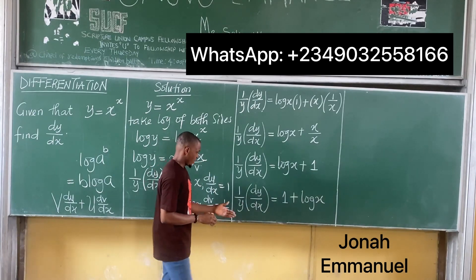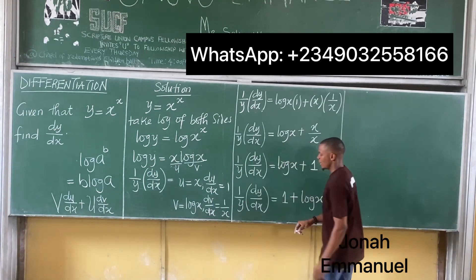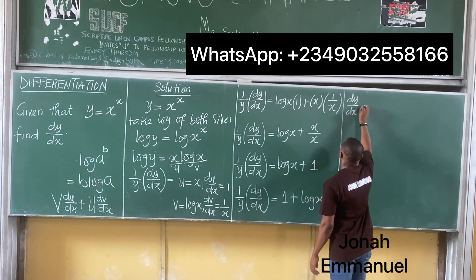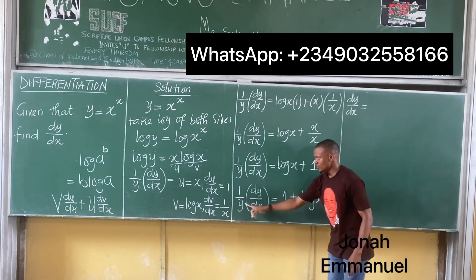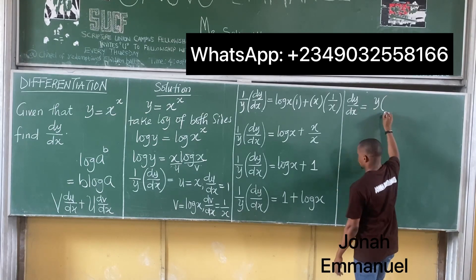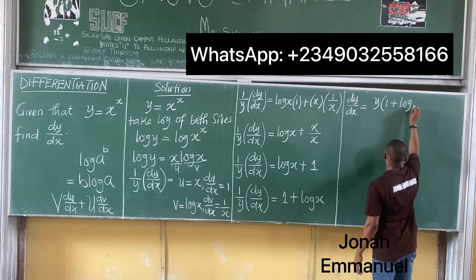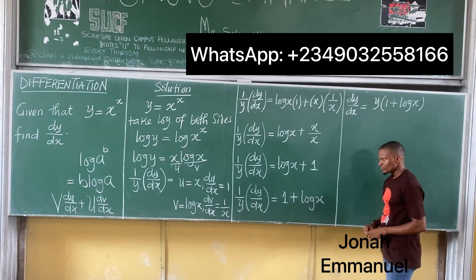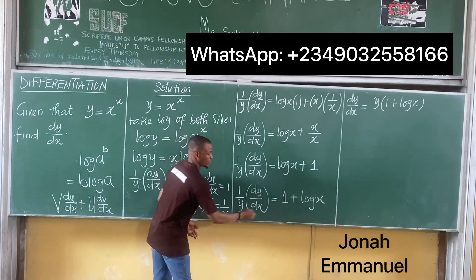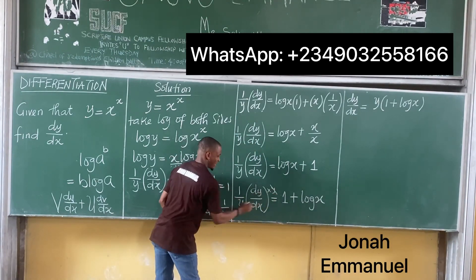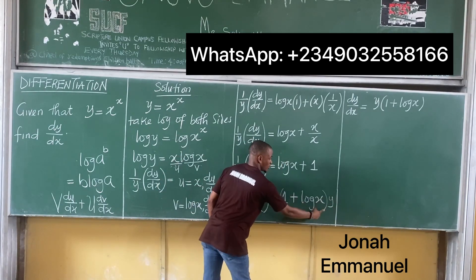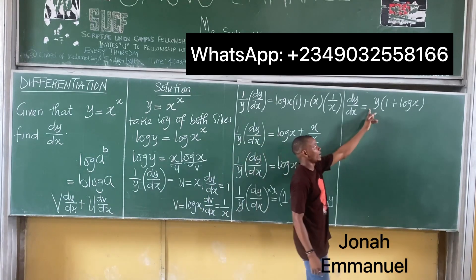From this, I can now solve for dy over dx. Multiplying both sides by y, dy over dx equals y times (1 plus log x).